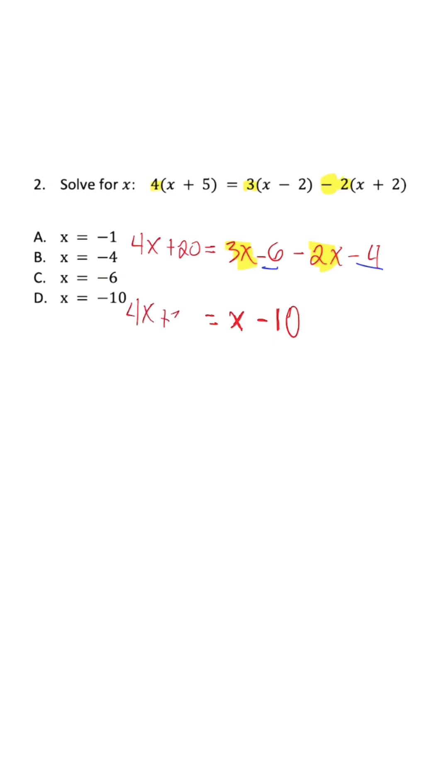Left side stays the same. So now I'm going to subtract x from both sides. 3x plus 20 is equal to negative 10.